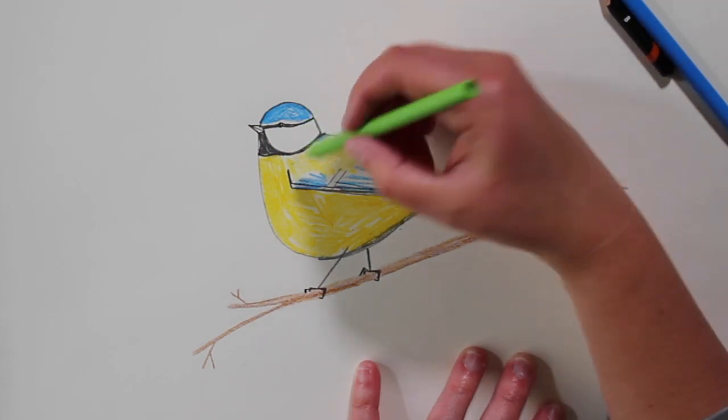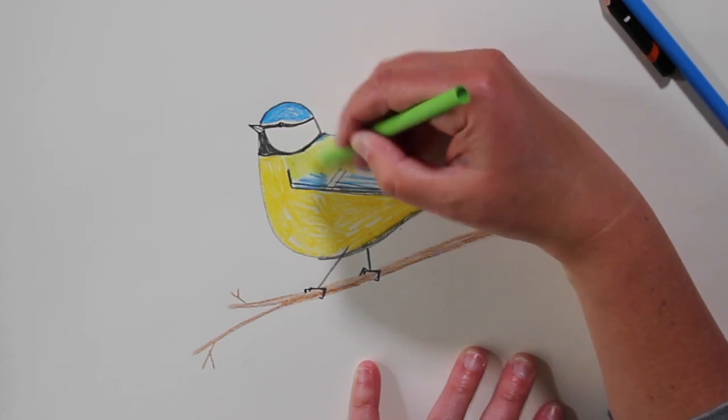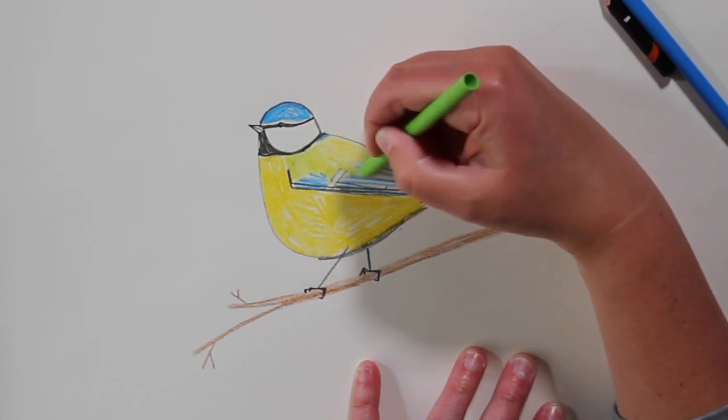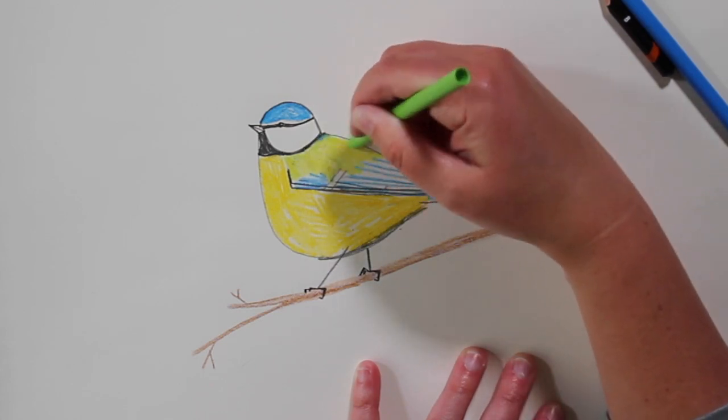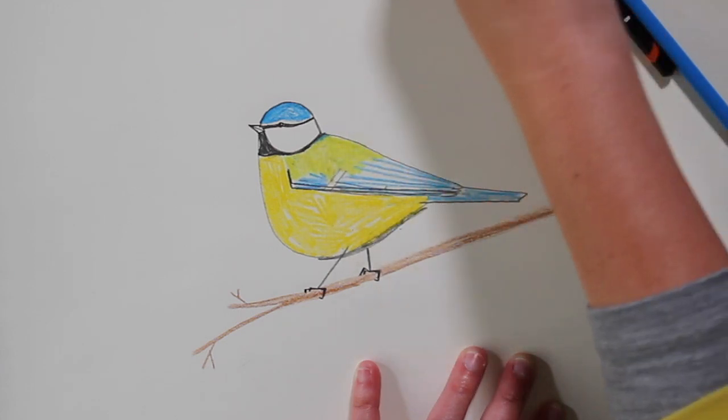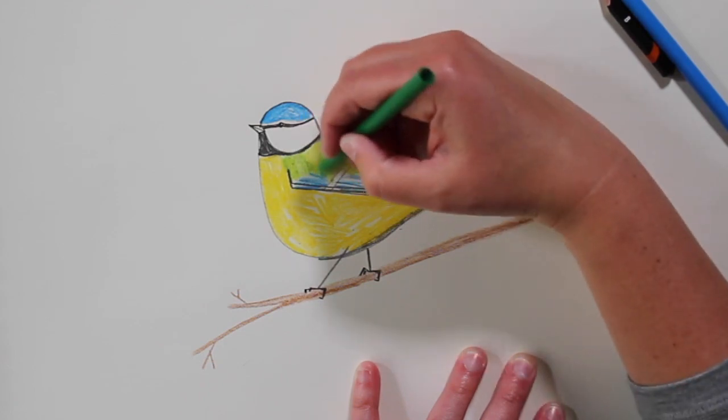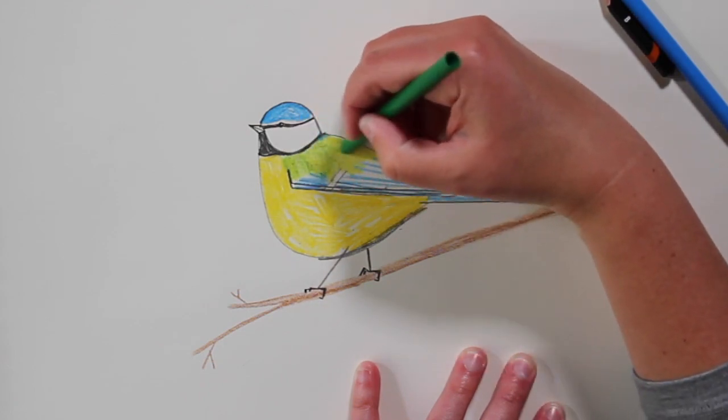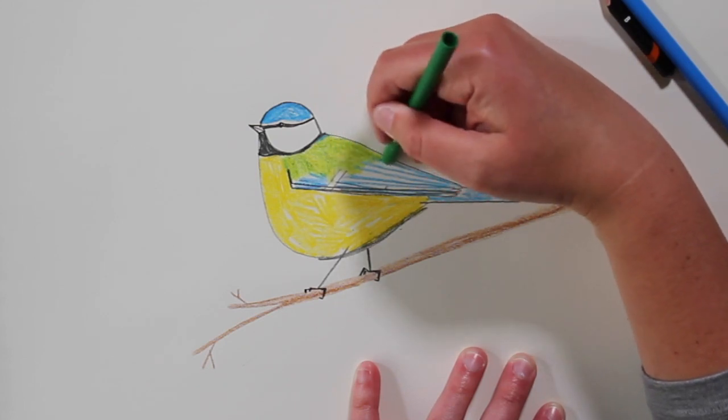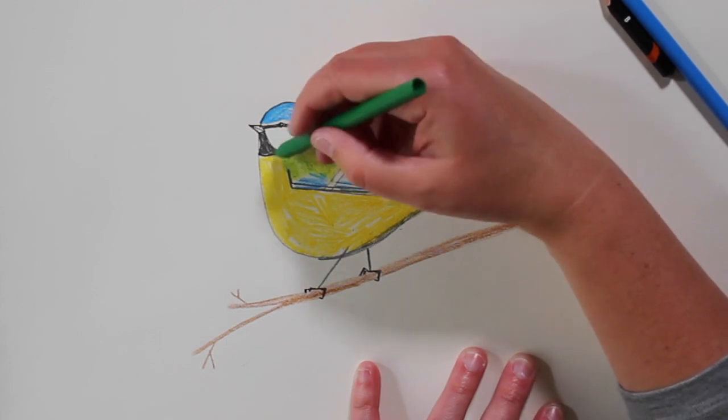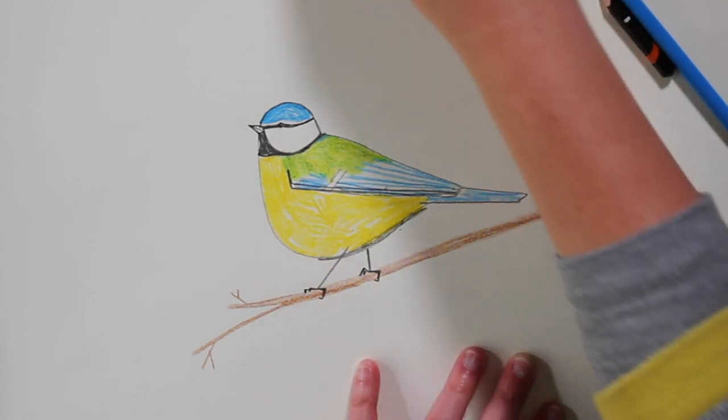And then I'm taking my light green crayon or pencil, if you're using pencils, and I'm going over the top of it like that. And then I'm going to take my darker green crayon or pencil, if you're using pencils, and go over the top like that. So it doesn't look exactly like a blue tit would in your garden, that sort of color, but it's as close as I'm going to get with some crayons.